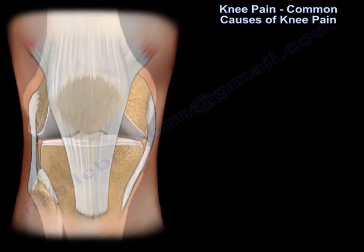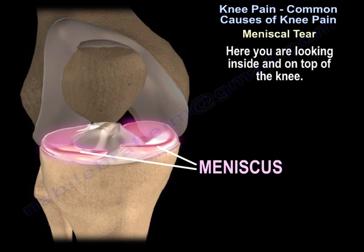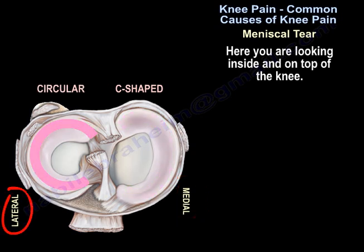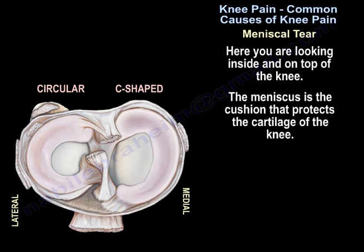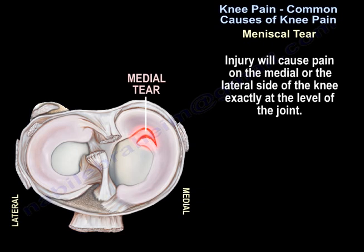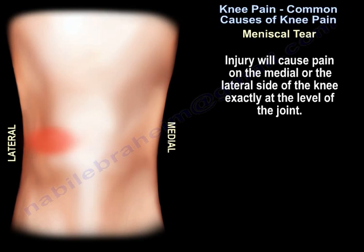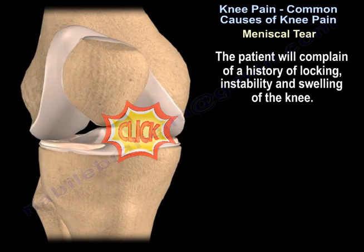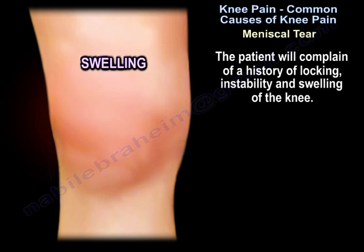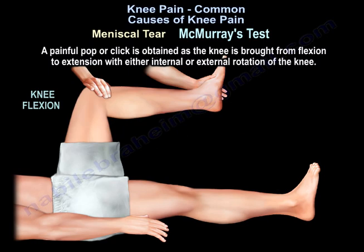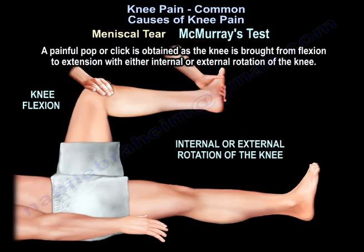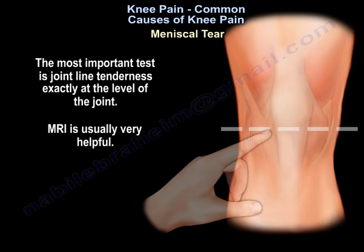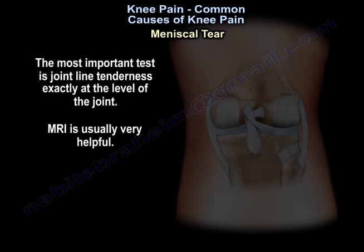Another important cause of knee pain is a meniscal tear. Here you are looking at the side and top of the knee, where you can see the medial meniscus and the lateral meniscus. The meniscus is the cushion that protects the cartilage of the knee. Injury will cause pain on the medial or lateral side of the knee, exactly at the level of the joint. The patient will complain of a history of locking, instability and swelling of the knee. McMurray test will be positive, and the most important finding is tenderness exactly at the level of the joint. MRI is usually very helpful.